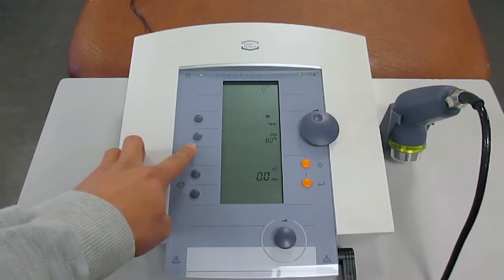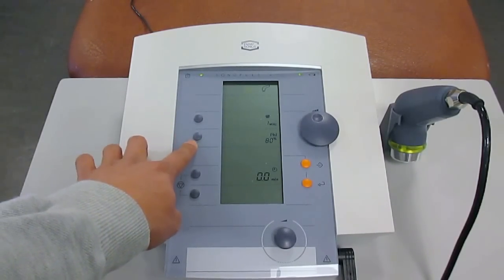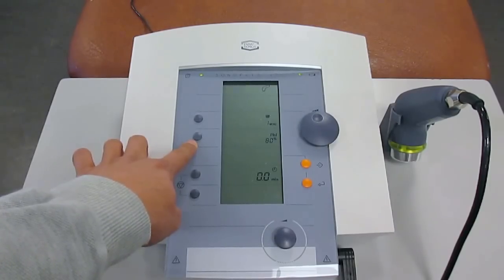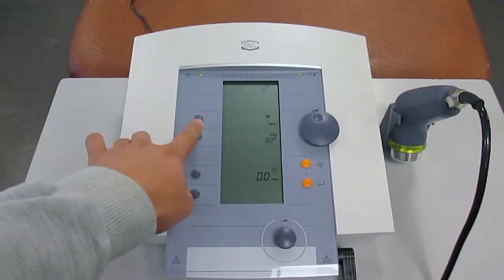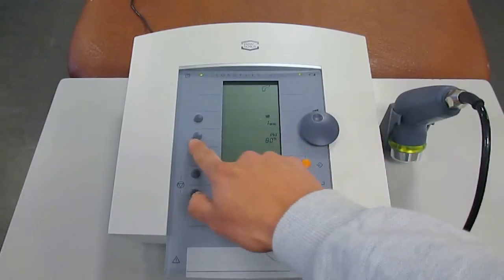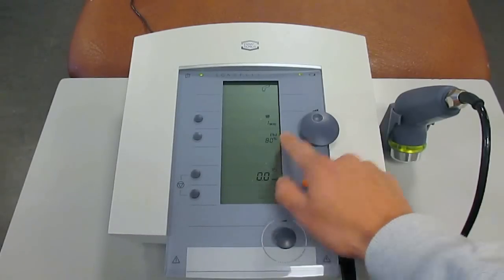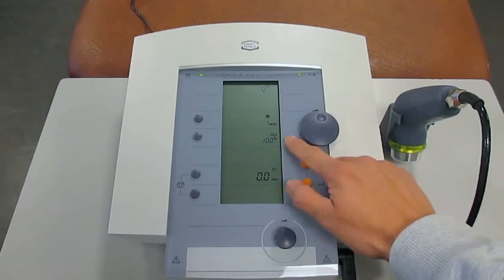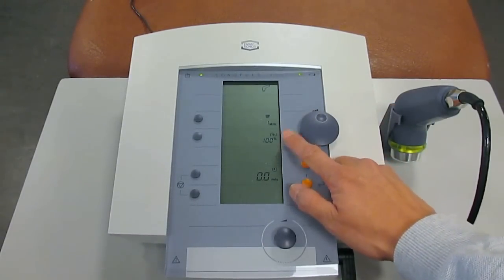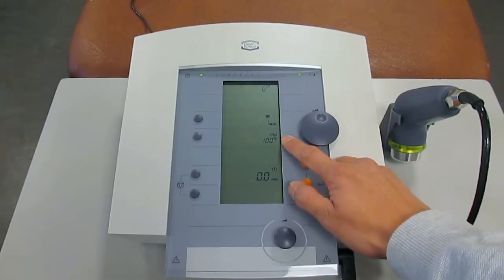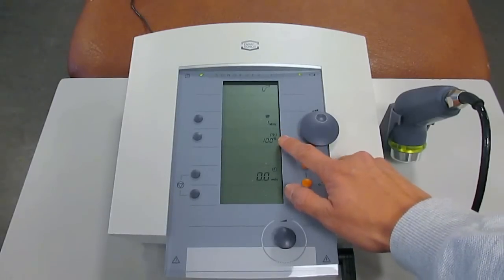This is the button for controlling the pulse percentage or pulse duration. For continuous ultrasound, what you do is when you push this button over here, you turn the dial to turn it up to 100%. That will give you continuous ultrasound. However, if you want to change that to a slightly lower percentage, simply turn on the dial to lower the percentage.